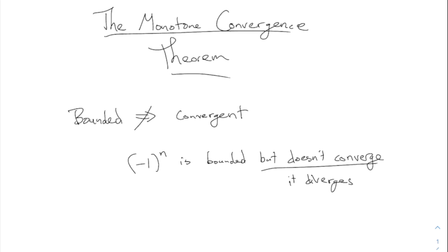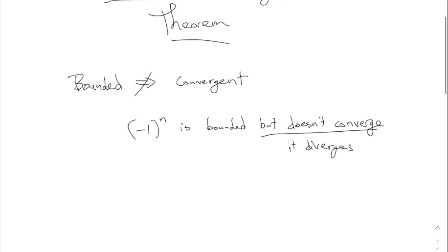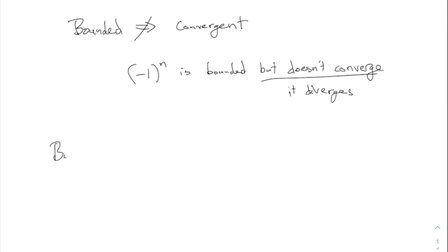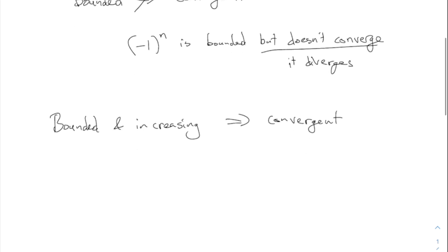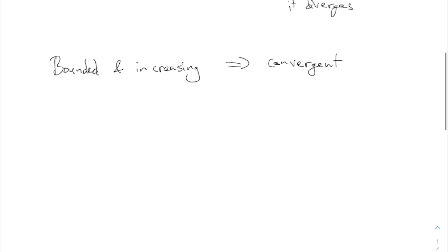As I was saying last time, there are some cases where bounded will imply convergence if you also assume some other conditions. It is a fact that bounded and increasing does imply convergence. And that's basically what the monotone convergence theorem says. Bounded and increasing does imply convergence.